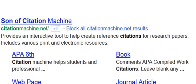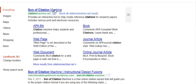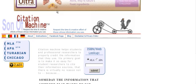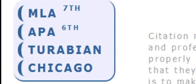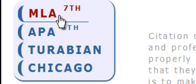If you Google Son of Citation, you will see one of the first entries is Son of Citation Machine. Click on that link. Clicking on that link brings you to this webpage here, and if we look to the left of the webpage, we can see that Son of Citation can help you to compose a reference section for either MLA, APA, Turabian, or Chicago style. For this example, we are going to compose a reference page for MLA style.